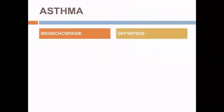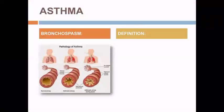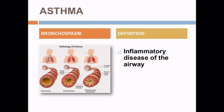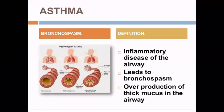So to begin with, what exactly is asthma? Asthma is an inflammatory disease of the airway that leads to bronchospasm and causes overproduction of thick mucus in the airway. In the picture alongside, you can see the first image shows the normal airway of a patient, the second is the airway of a patient who is asthmatic and is on medication, and the third is the airway of a patient who has just received an asthmatic attack.